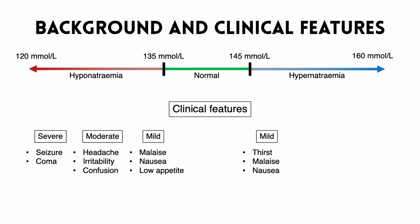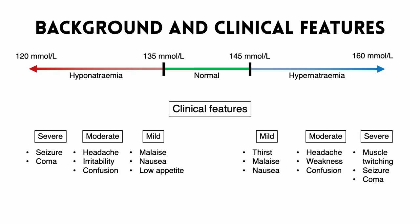On the other side of things, mild hypernatremia can present with thirst, as it's usually a sign of hypovolemia — that is, a low amount of total fluid in the body. Again, malaise and nausea, so quite nonspecific symptoms between mild hyponatremia and hypernatremia. Moderate hypernatremia also presents fairly similarly to moderate hyponatremia, with headache, generalised weakness, and confusion. And then finally, severe hypernatremia often presents with muscle spasms, twitching, seizures, and coma.